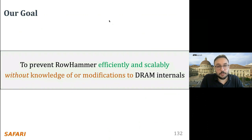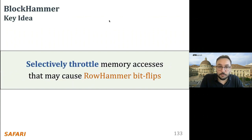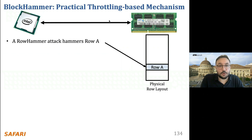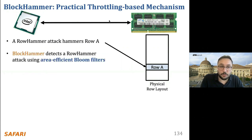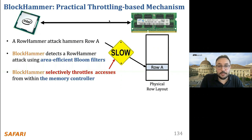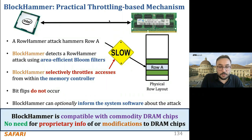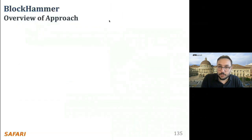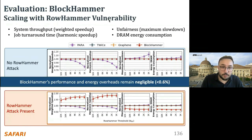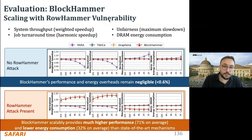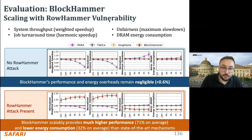Our goal with BlockHammer is to prevent RowHammer efficiently and scalably without requiring knowledge of or modifications to DRAM internals, preserving compatibility with commodity DRAM. The key idea is to selectively throttle memory activities that may cause RowHammer. BlockHammer detects a RowHammer attack using area-efficient Bloom filters and selectively throttles the activities from within the memory controller for the particular aggressor row, so no bit-flips occur. When there is no RowHammer attack, BlockHammer's performance and energy overheads remain negligible — below 0.6%. When there is a RowHammer attack, it provides much higher performance and lower energy consumption than state-of-the-art mechanisms.